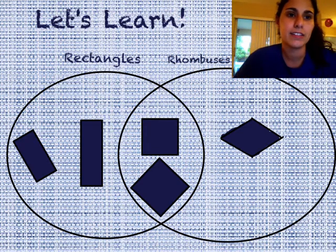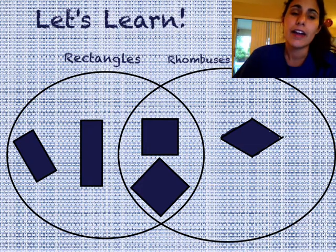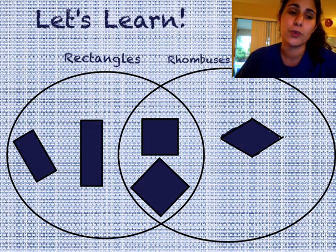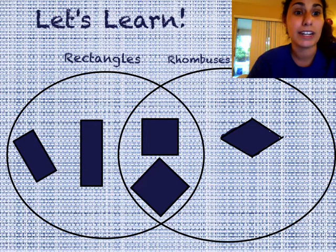I have rectangles over here and I have rhombuses over here, meaning that the square and the rhombus, that's kind of like a square on its side with four straight equal sides and four right angles, is also a rectangle.